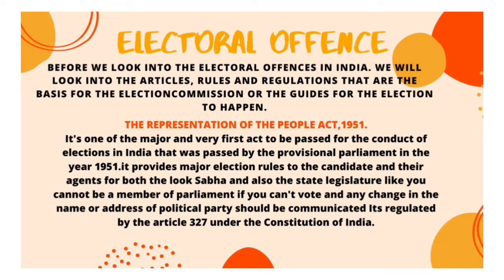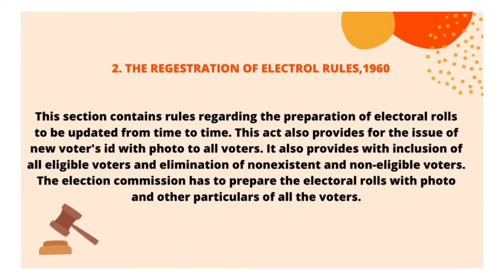The Representation of the People Act 1951 was one of the major and very first acts to be passed for the conduct of elections in India. It was passed by the provisional Parliament in 1951 and provides major election rules to candidates and agents for both the Lok Sabha and state legislatures. For example, you cannot be a member of Parliament if you cannot vote, and any change in the name or address of a political party must be communicated to the Election Commission. It is regulated by Article 327 of the Constitution of India.